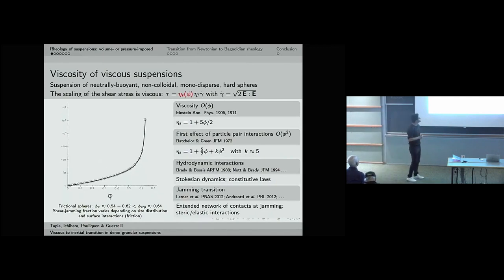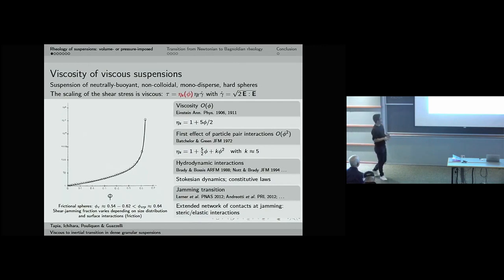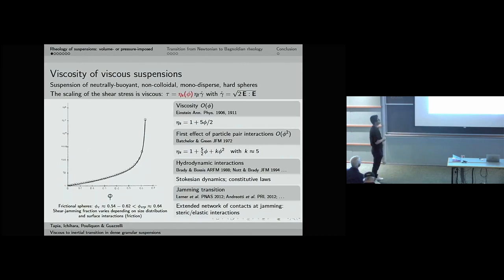Since the seminal work of Einstein, many experimental, numerical, and theoretical works have tried to explain what is sketched in this illustration: the evolution of η_s as a function of packing fraction. Two important features are visible: first, η_s is a monotonically increasing function of φ; second, it has an asymptotic behavior approaching a maximum packing fraction φ_max, beyond which we measure the elastic response of the granular medium. Recent work in this field has focused on understanding and describing this asymptotic evolution.